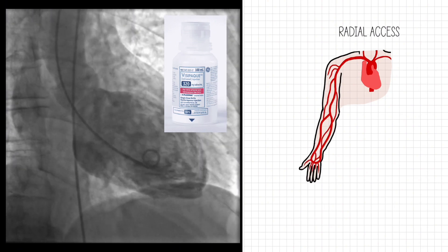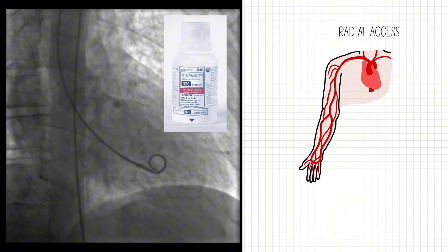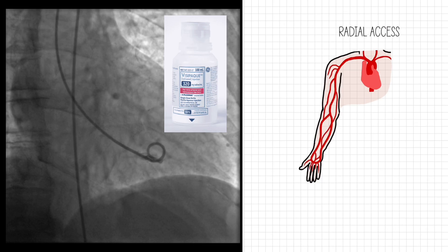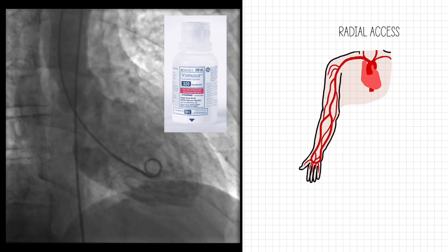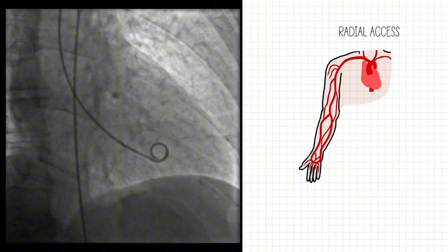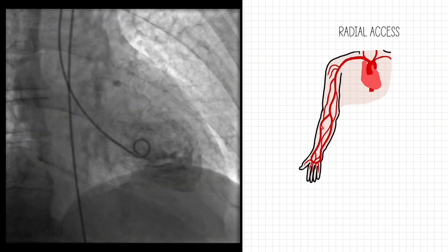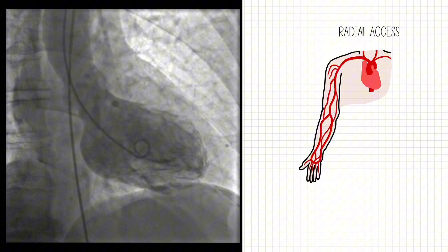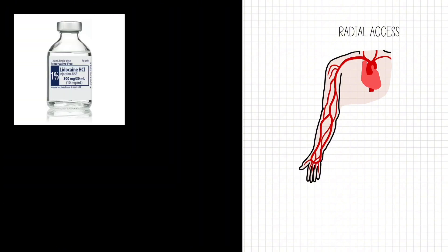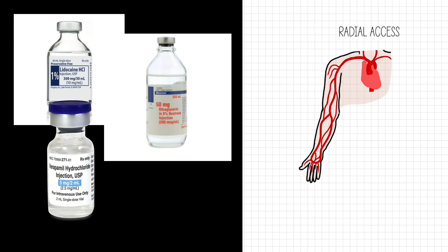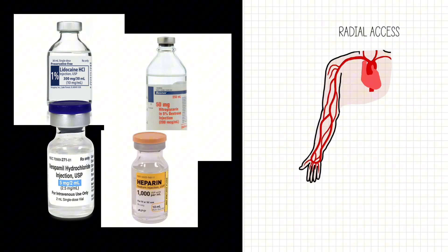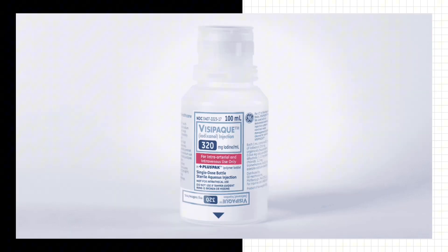Regardless of the type of access being used, we're using contrast to be able to visualize, just like when your patient goes for a CT scan. We are injecting contrast. We give different medications: sedation for radial access, usually a combination of lidocaine for numbing, then nitro, verapamil, and sometimes a low-dose heparin.